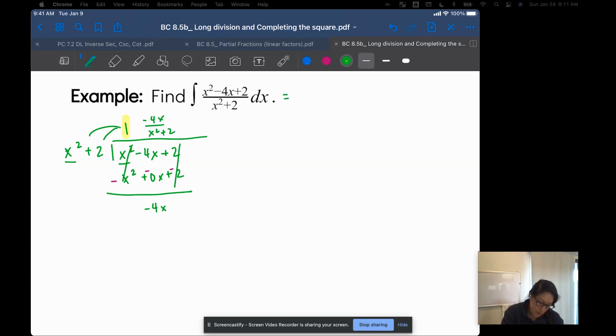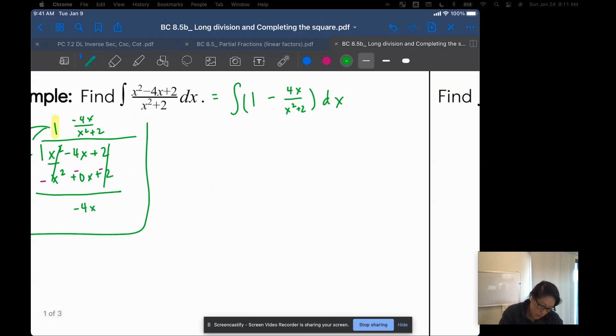So I can rewrite this integral as the integral of 1 minus 4x over x squared plus 2 dx, and then to make my life even better, I'm just going to write this as two integrals. So the integral of 1 dx minus the integral of 4x over x squared plus 2 dx.